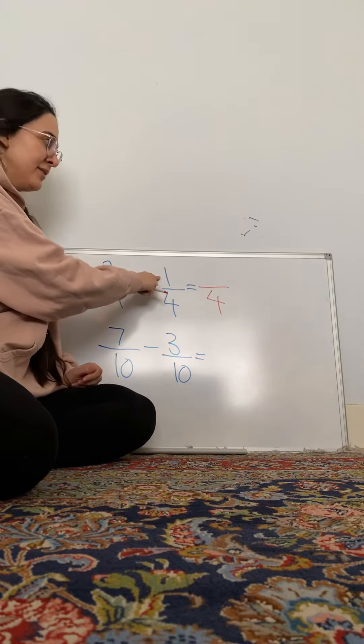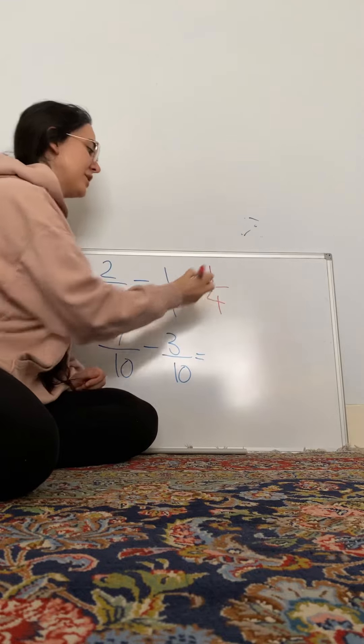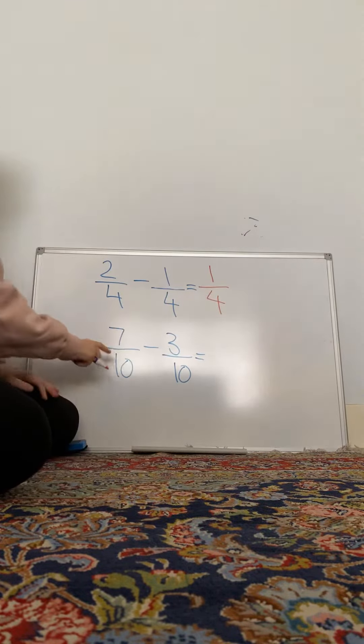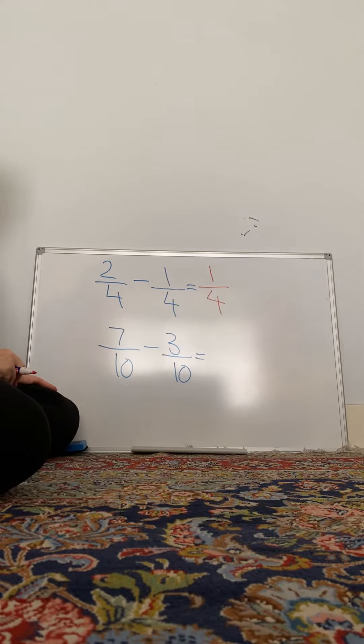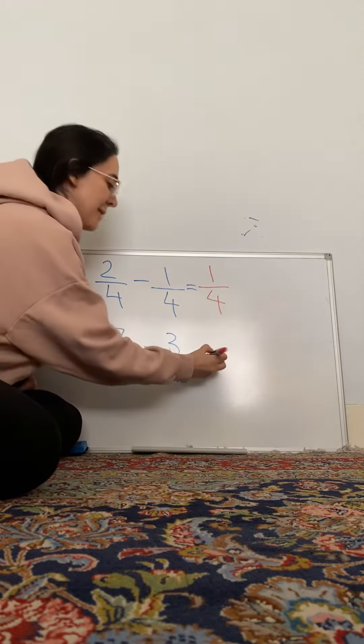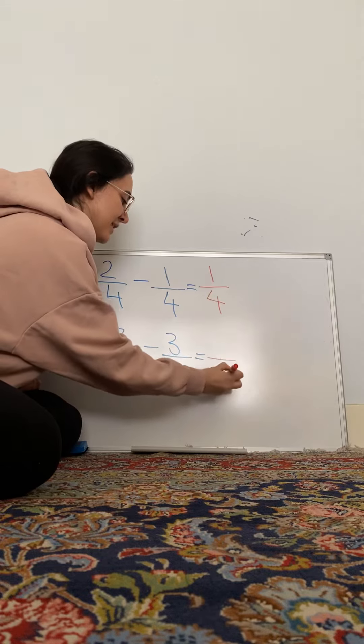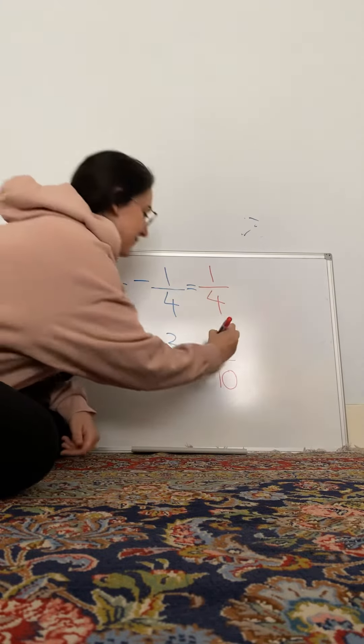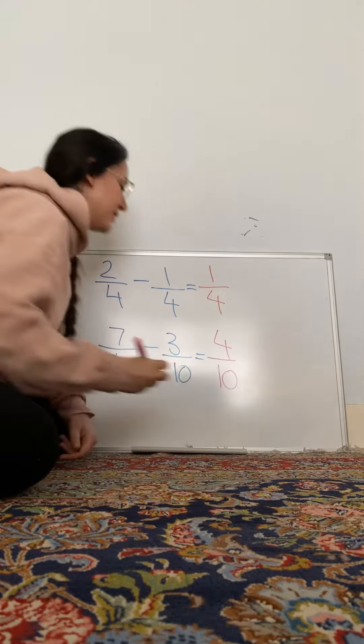2 take away 1 is of course 1, 1 fourth. The next question, 7 take away 3, but before we do that remember denominator stays the same. So 7 take away 3 is? Good, it is 4, 4 tenths.